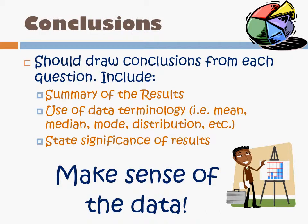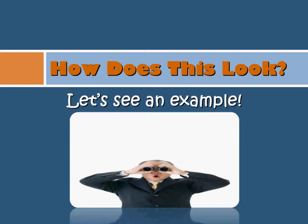So what should your conclusions look like? You should draw conclusions from your question results — this should be a summary of the results. You should use data terminology: we've talked about mean, median, mode, and various distributions, so those should be included in your analysis. Then you need to make sense of the data — tell the reader what this data is suggesting. This is where you state the significance: the 'so what.' Let's look at an example to really see what we mean by making sense of the data.